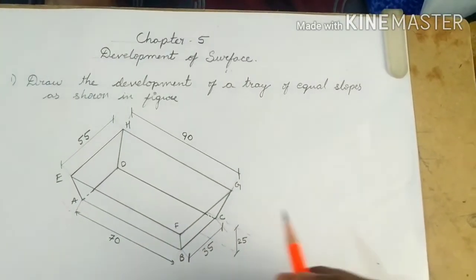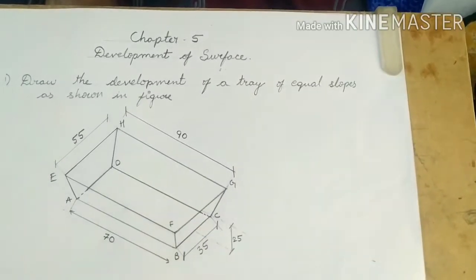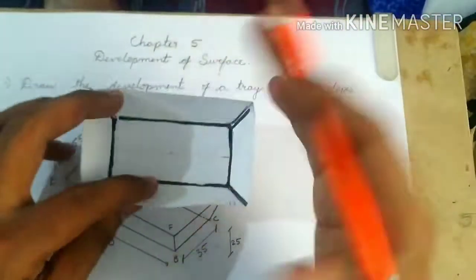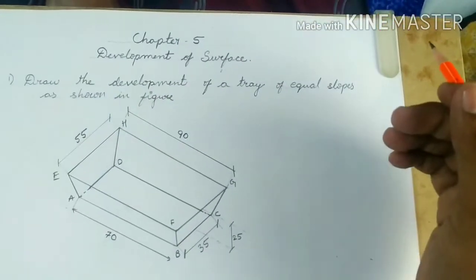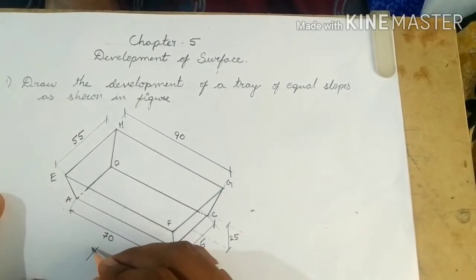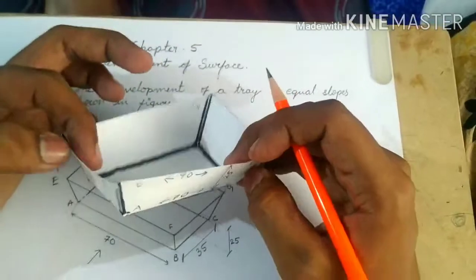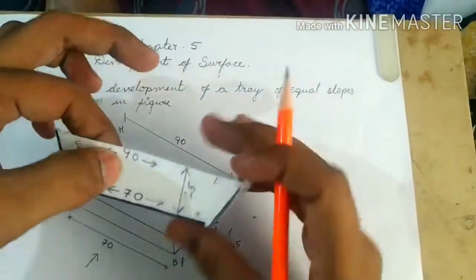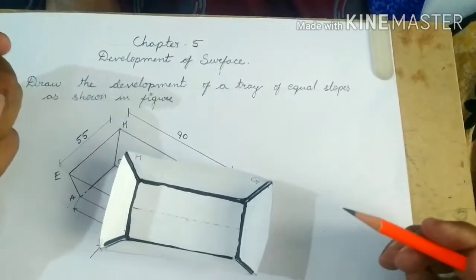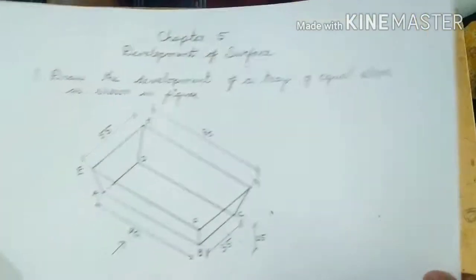We need to develop the surface of this tray. Developing a surface means finding the shape and size of the object when we fully open the structure — essentially, what shape do we get when we unfold the tray. To do this, we first draw the true front view and the true top view of the tray.